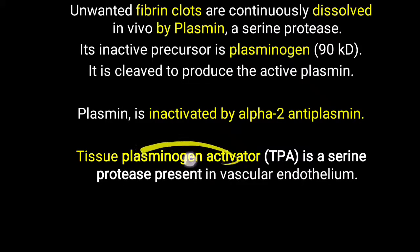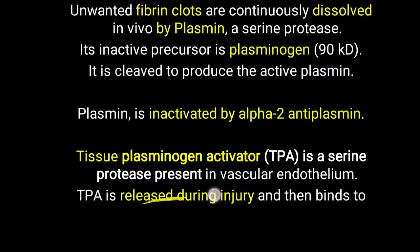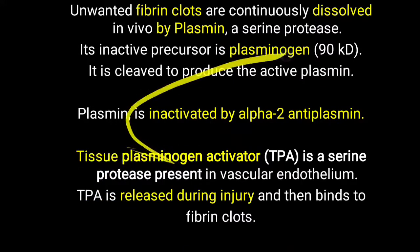Tissue plasminogen activator is a serine protease present in the vascular endothelium — the inner layer of the vascular system. Whenever there is injury to the vascular system, tissue plasminogen activator is released in response to injury. It then binds to the fibrin clot and helps dissolve it by activating plasminogen.